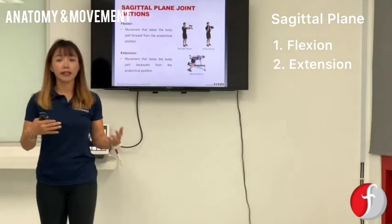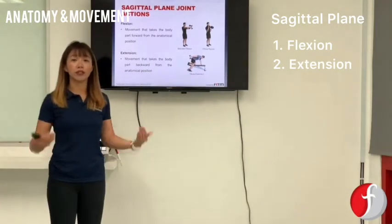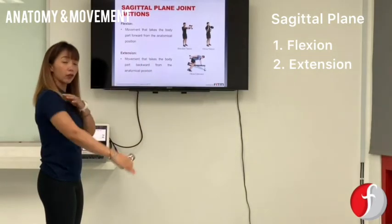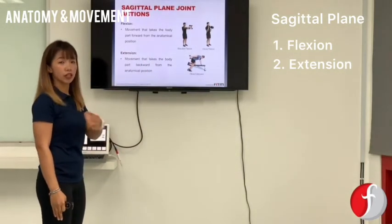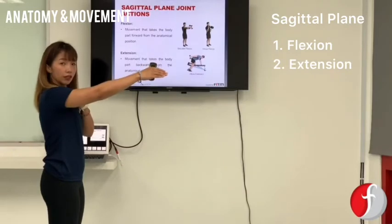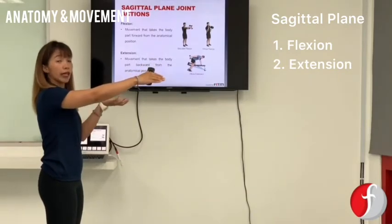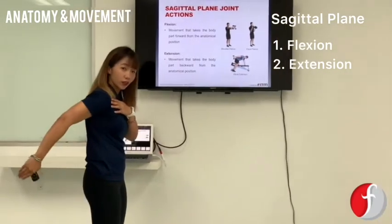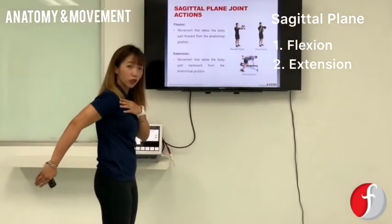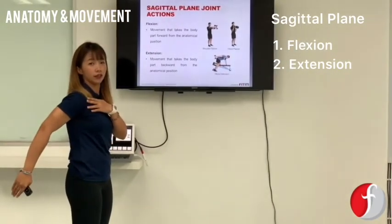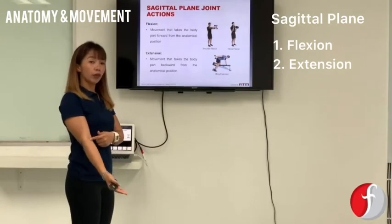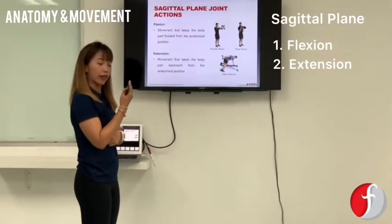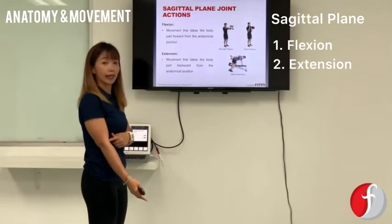Let's look at some of the joints in your body. For the shoulder joint, when there are two walls beside you, if you perform shoulder flexion it looks like this, and if you perform shoulder extension it looks like this. If you go more than that, we call that shoulder hyperextension. For your elbow, closing it up is called elbow flexion, and opening it up is called elbow extension.